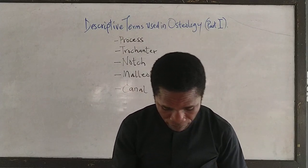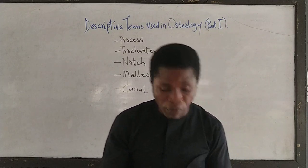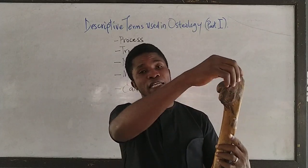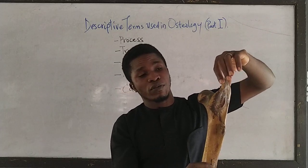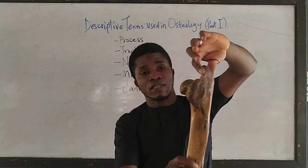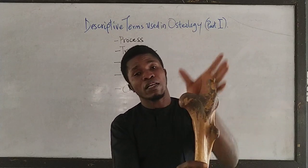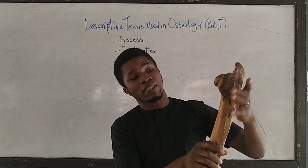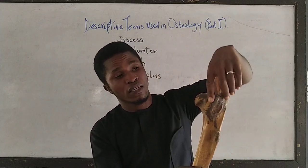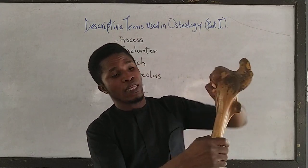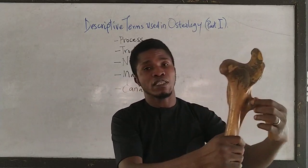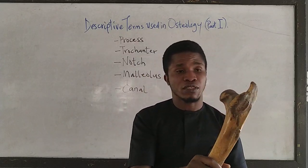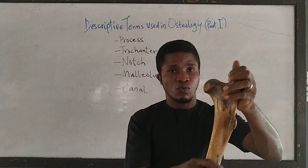The second term is the trochanter. A trochanter is a prominence near the upper extremity of the femur. This is the proximal or upper extremity of the femur, and on this proximal side we have three different trochanters: the greater trochanter, the lesser trochanter, and the third trochanter or trochanter tertius — which is found in equine species.